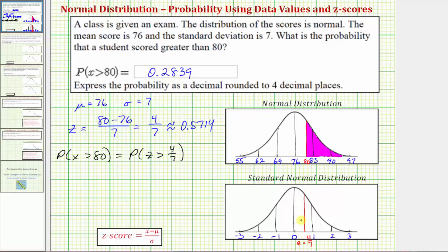Notice how the location of the z-score of four-sevenths on the horizontal axis is the same location as to where 80 is on the horizontal axis for the normal distribution. Because we're looking for the probability that z is greater than four-sevenths, we want to determine the probability the z-score is to the right of four-sevenths, which should be in this region here. For the standard normal distribution, remember the probability would be equal to the area under the curve over this interval, where the area under the entire curve would be equal to one.